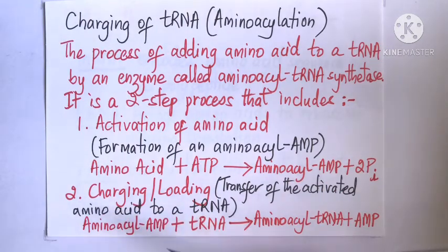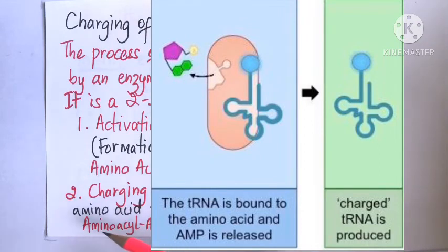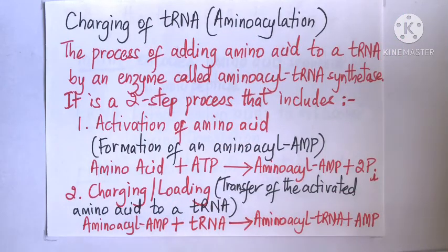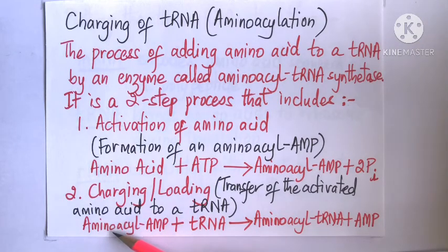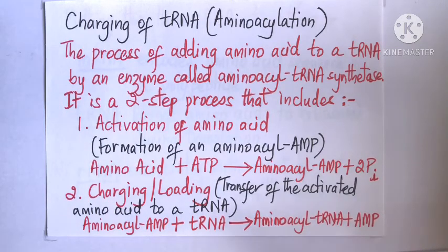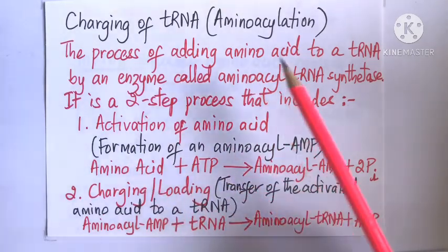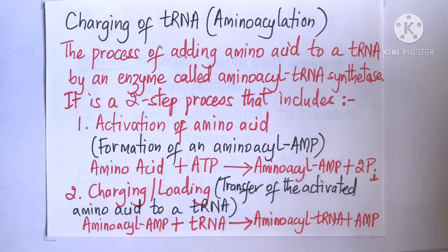In the second step, known as charging or loading, the enzyme transfers the activated amino acid to the 3' end of the tRNA, using the energy from AMP, to yield an aminoacyl-tRNA — a tRNA containing an amino acid — and releases the AMP. There are 20 different aminoacyl-tRNA synthetases, one for each amino acid, to ensure the right amino acid is linked to the right tRNA.